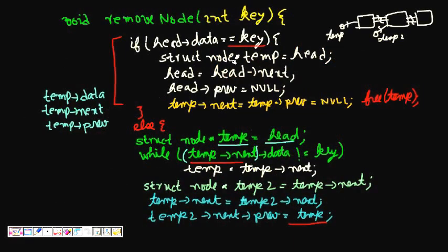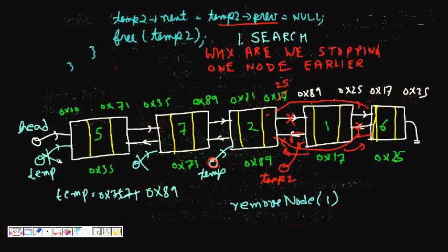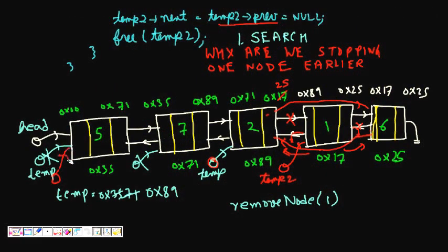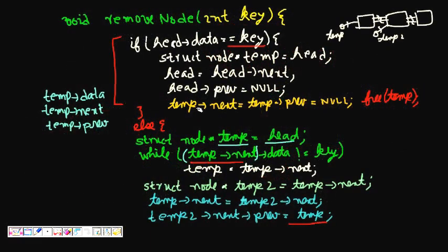For the head node case: we store temp = head, then set head = head->next. Now the second node becomes the new head. We set head->prev = null. Then temp->prev = null and temp->next = null as well.